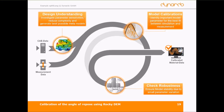First, we want to gain design understanding, which means investigating parameter sensitivities and reducing the complexity of our problem. This is necessary to make a good calibration onto our measurement results, because we can only calibrate parameters which have influence — otherwise those parameters get unreliable values. After model calibration, we want to check the robustness of our calibration to see how scattering input parameters affect our outputs, ultimately yielding trustworthy calibrated material data.